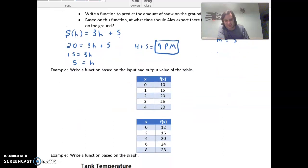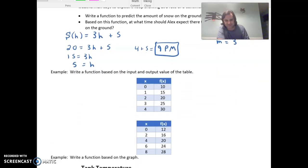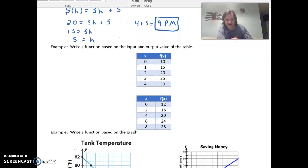All right, so let's look at some variations here. I've got write a function based on the input and output values of the table. So the first one here, if we look at it, we have when x is 0, f of x is 10. So when x is 0, that's the starting amount. So basically that tells us that b equals 10.